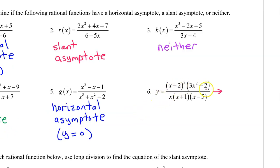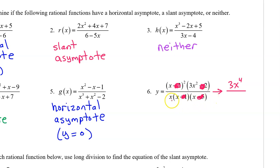For number six, we need to figure out what the leading terms are. Ignoring the negative two and the plus two, we have x squared times three x squared, so that's three x to the fourth power — that will be the leading term of the numerator. In the denominator, the plus one and the minus five will not matter, so we are left with x times x times x, which is x to the third power. Since the numerator degree is exactly one more than the denominator, there is a slant asymptote.